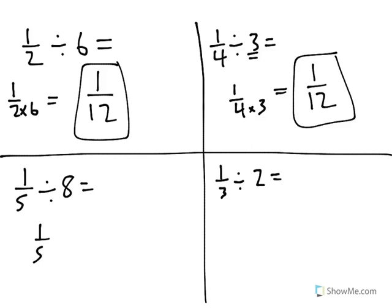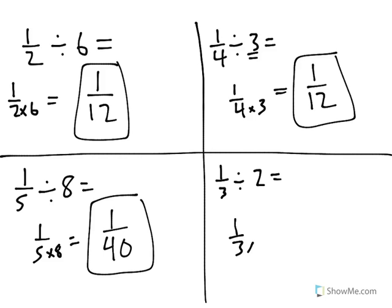So on and so forth. We'd be starting with 1 5th, but breaking that 1 5th into 8 times as many pieces. We still only want to know the value of 1 for 1 40th, and then breaking 1 3rd into 2 times as many pieces for a correct answer of 1 6th.